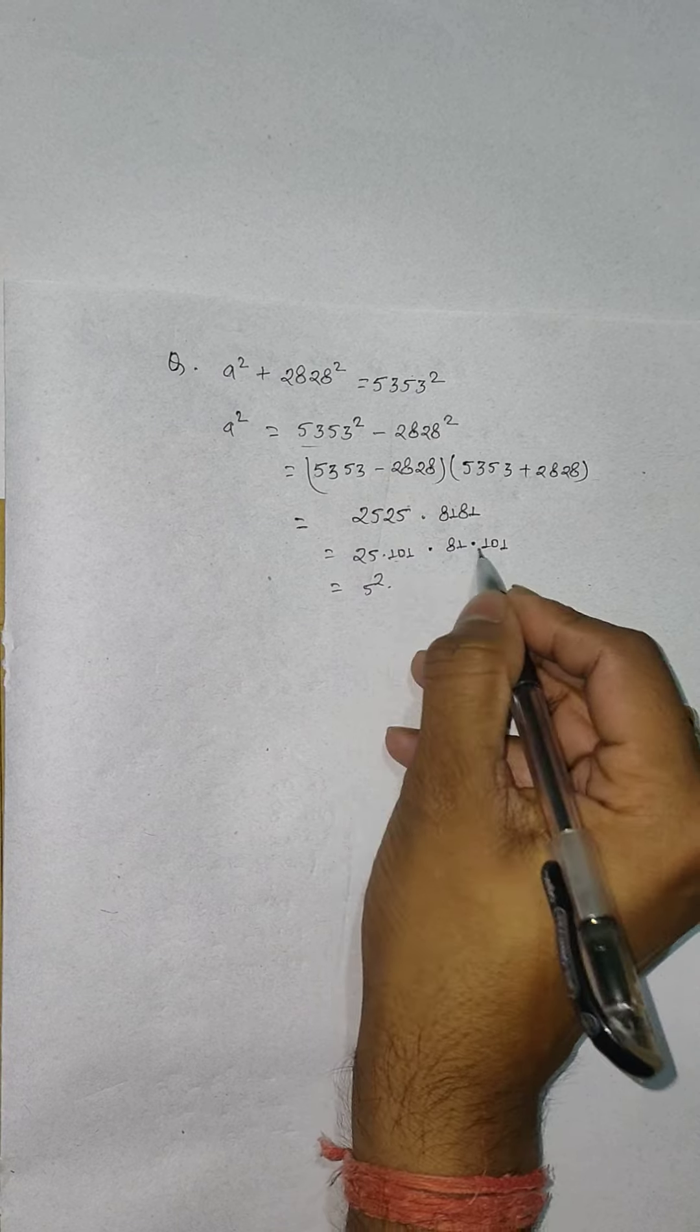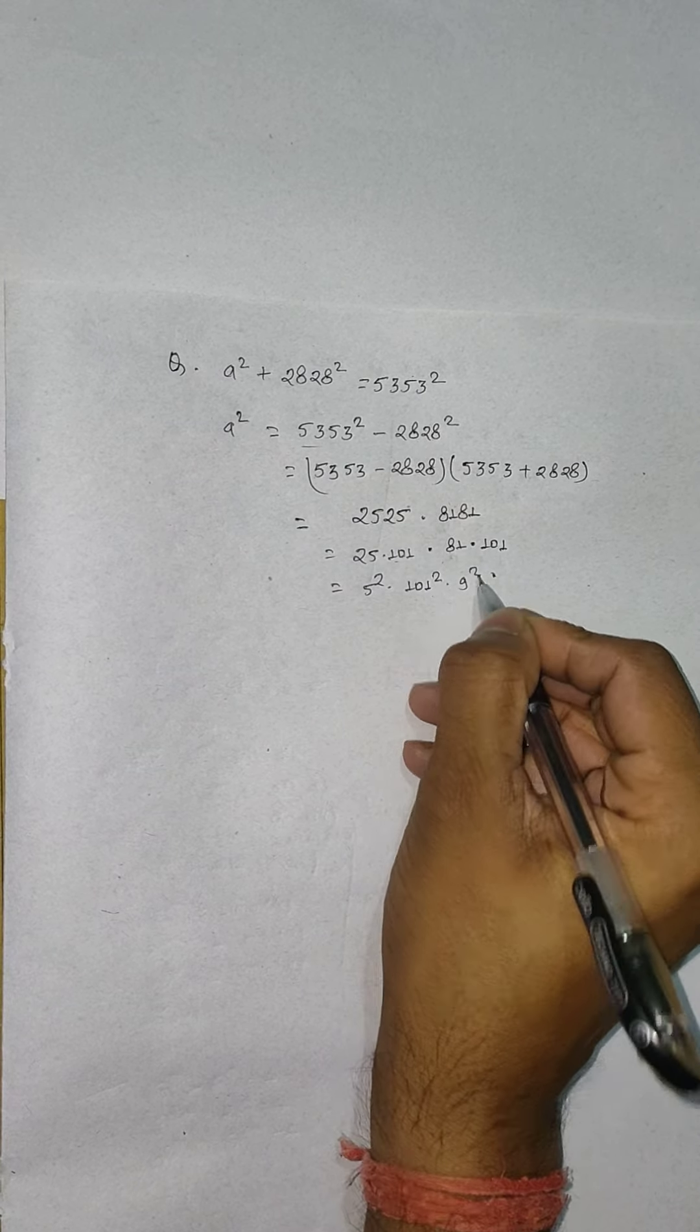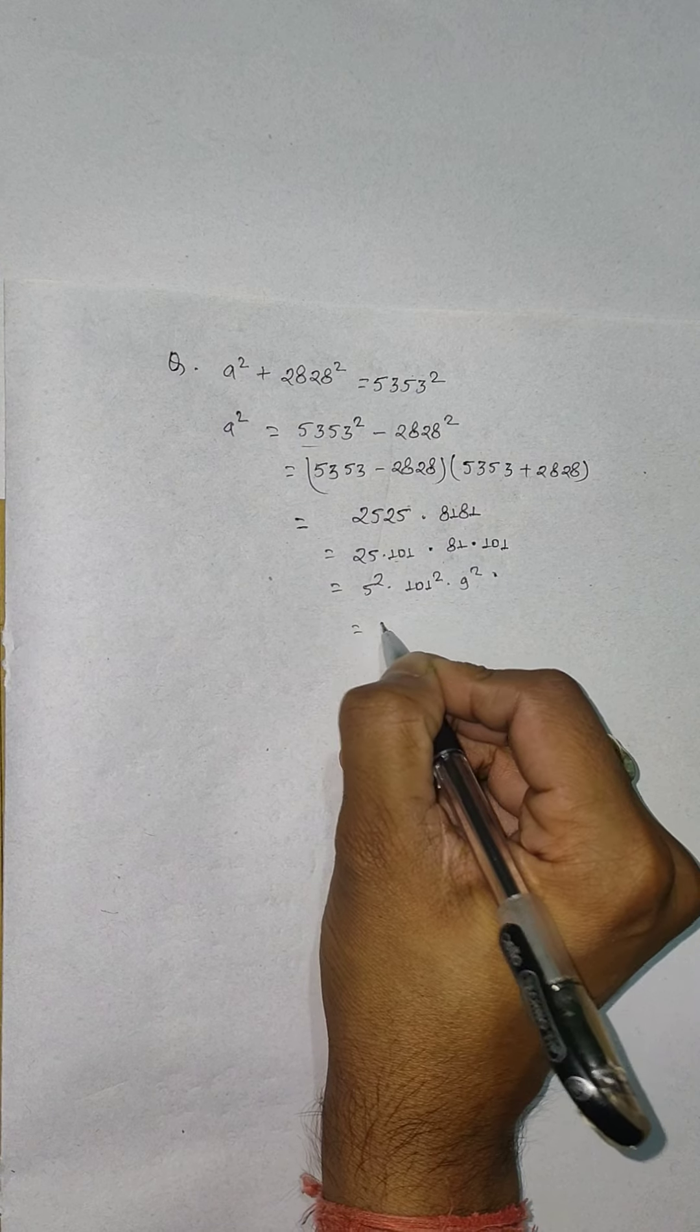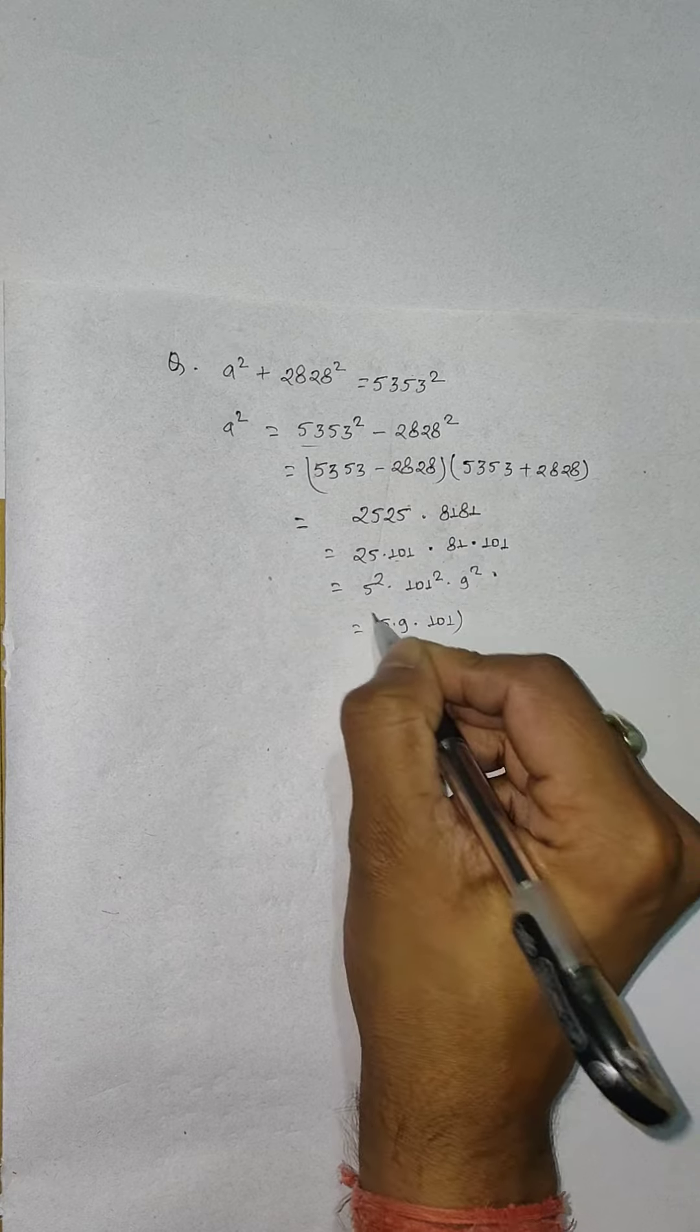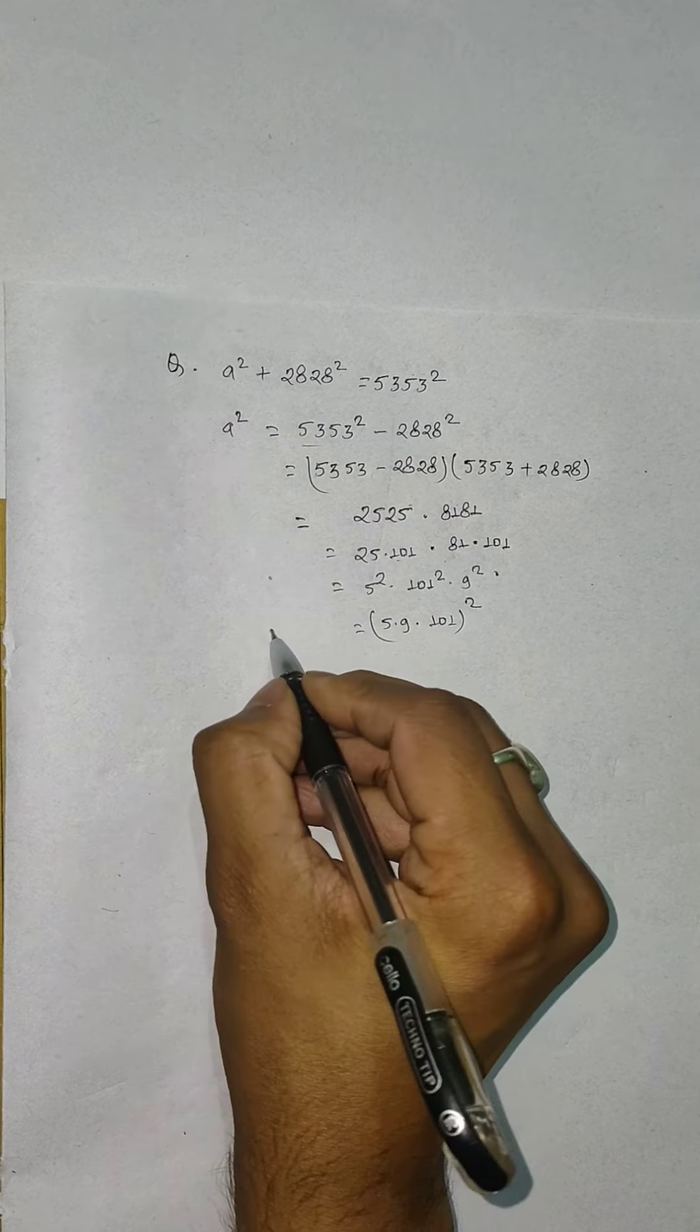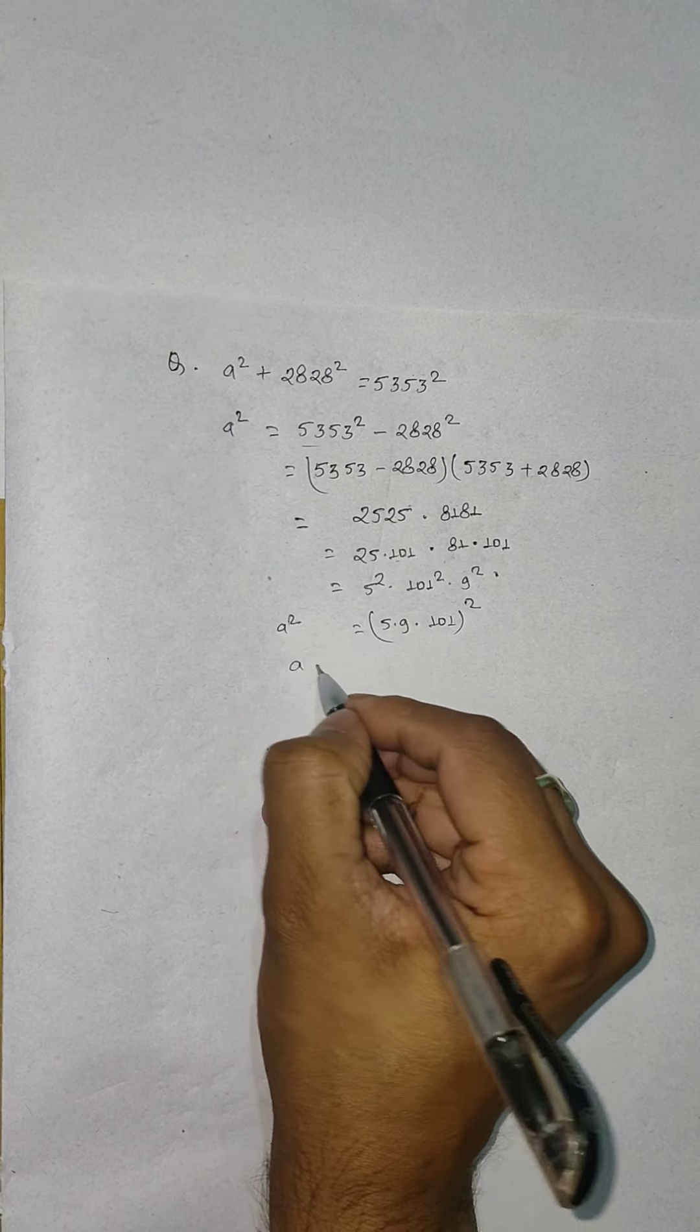101 and 101 will become 101², and this will be 5² and 9². So we can write as (5 × 9 × 101)². This will be a².